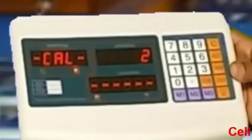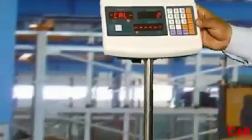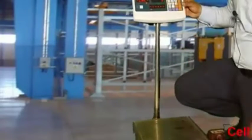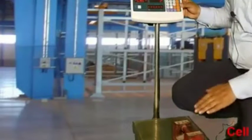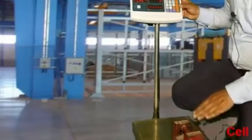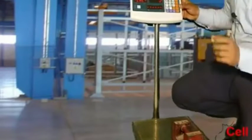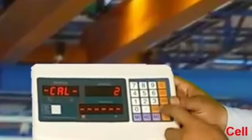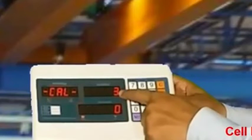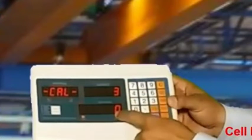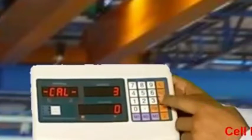When 2 comes on the screen, we put dead weight on the platform. This is 5kg dead weight. Then press tear button. It shows CAL 3 on the screen. When CAL 3 comes, we enter its full capacity.